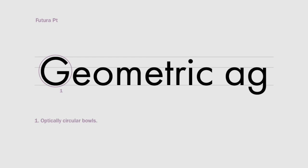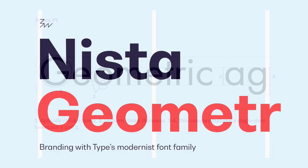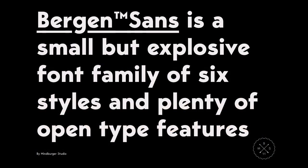The last subcategory is Geometric. This style was popular in the 1920s and originated in Germany. The characters have a uniform stroke thickness and optically circular balls, with a strong emphasis on straight lines. This category features a single-story lowercase a and g. Some geometric font types from Envato Elements are Nista Geometric and Bergen Sans.